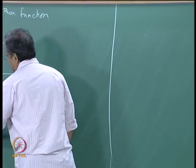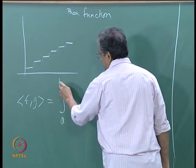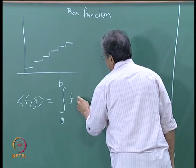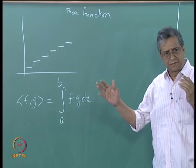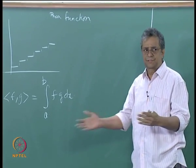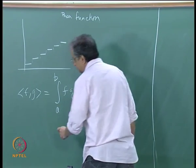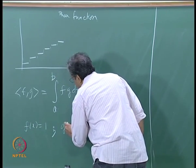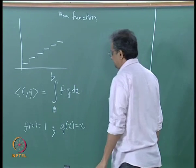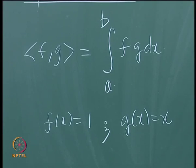We defined the dot product as the dot product of f and g as the integral, if the functions are defined on the interval a to b, of f times g dx. We will see what this means if we take the interval 0 to 1 with the standard polynomials. Consider two functions: f of x equals 1 and g of x equals x. Are these functions orthogonal to each other, or what is the angle between them?